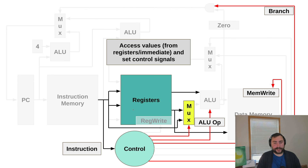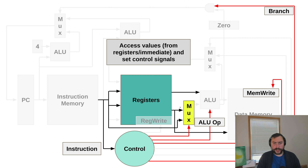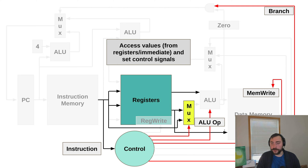From there, we actually make the access of our registers — we start reading things out and set our control signals. For registers, we'll read out two registers: one of them will go into the MUX, our multiplexer used to select between two different inputs, and the other input goes straight to the ALU for address calculation. Our immediate value will be the other input to our MUX — that's what we want forwarded to this ALU. And our second register output immediately goes to our data memory — that's what we're going to be writing to memory, and we don't want to do any calculation on it.